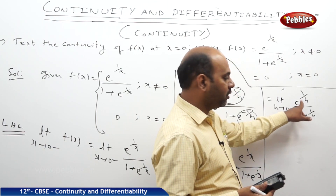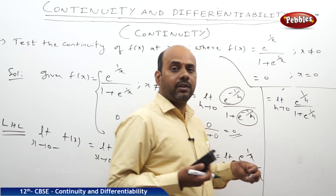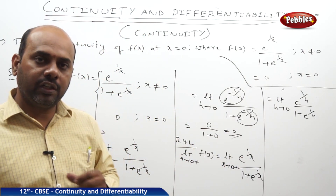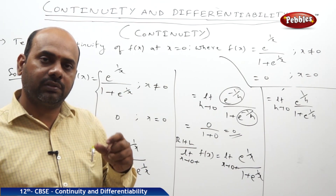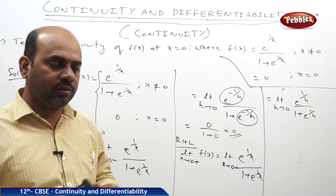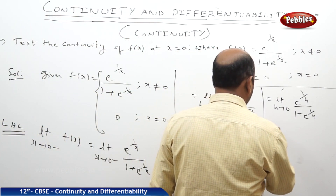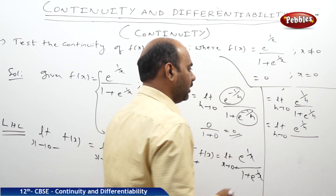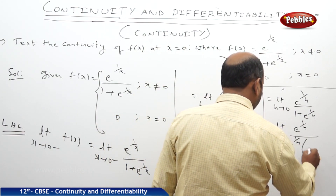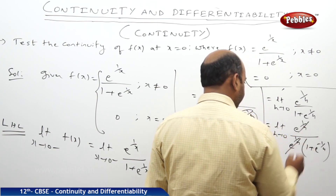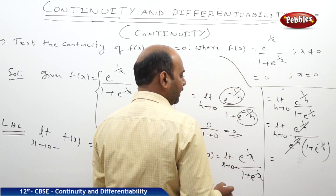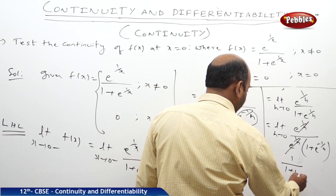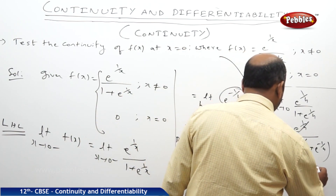Whenever we get infinity/infinity, as explained in our earlier limits classes, we take the highest power term common in numerator and denominator and cancel. Here I take e^(1/h) common from numerator and denominator, which gives 1 / (e^(−1/h) + 1). After cancellation and applying the limit, e^(−1/h) → 0, so the denominator becomes 1/(1 + 0) = 1. Therefore, the right-hand limit equals 1.